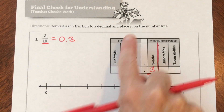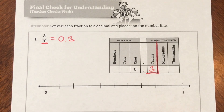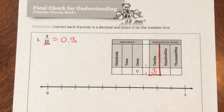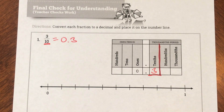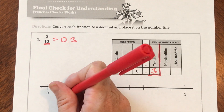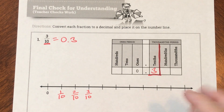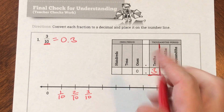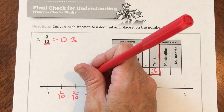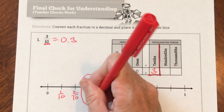They also wanted it placed on the number line. This would be one tenth, this would be two tenths, this would be three tenths — because this has been partitioned into ten parts. So three tenths is right there, which means three tenths as a decimal would also be right there.